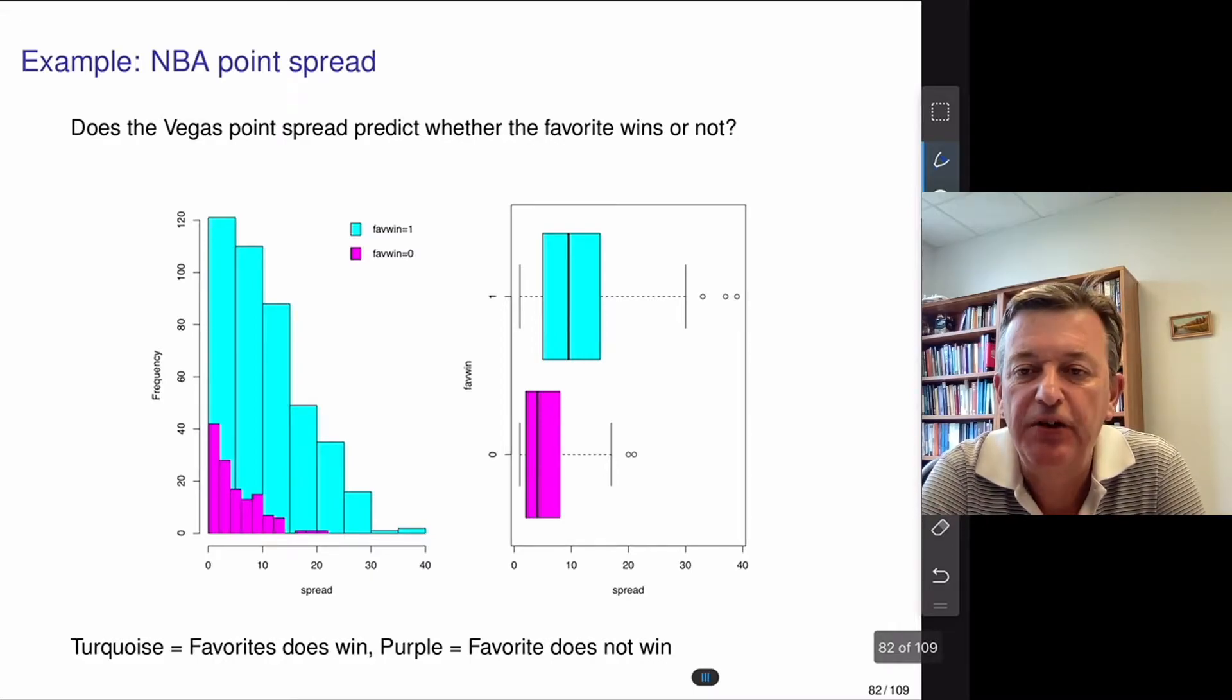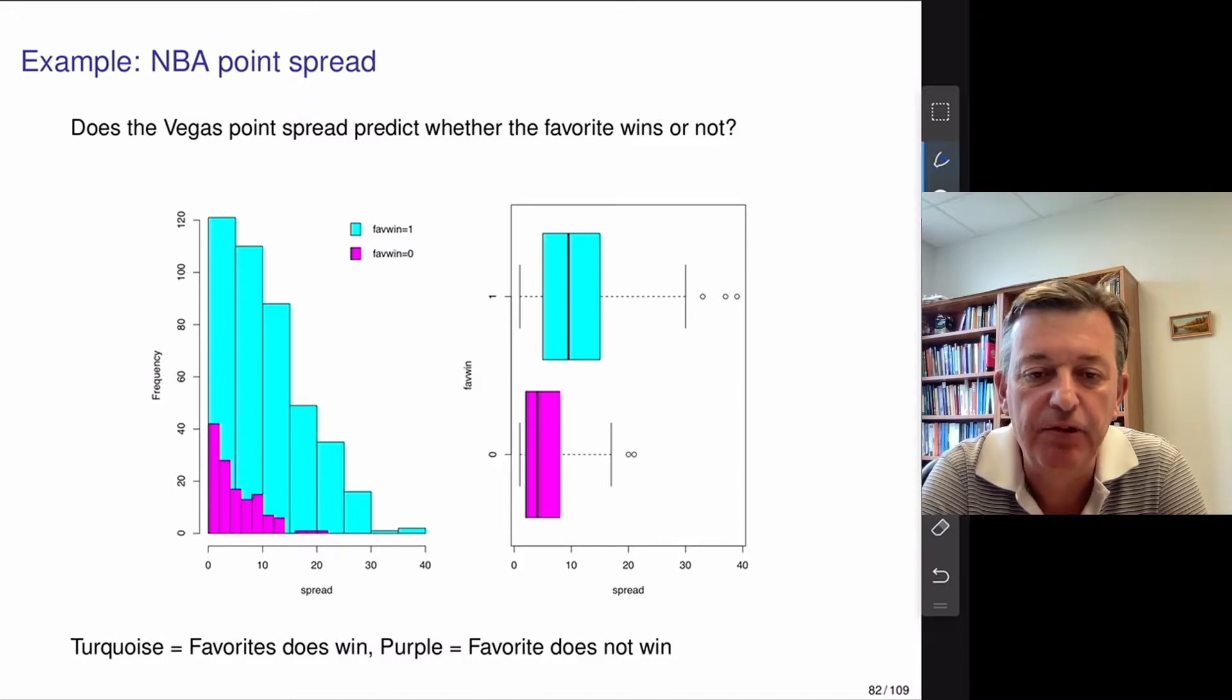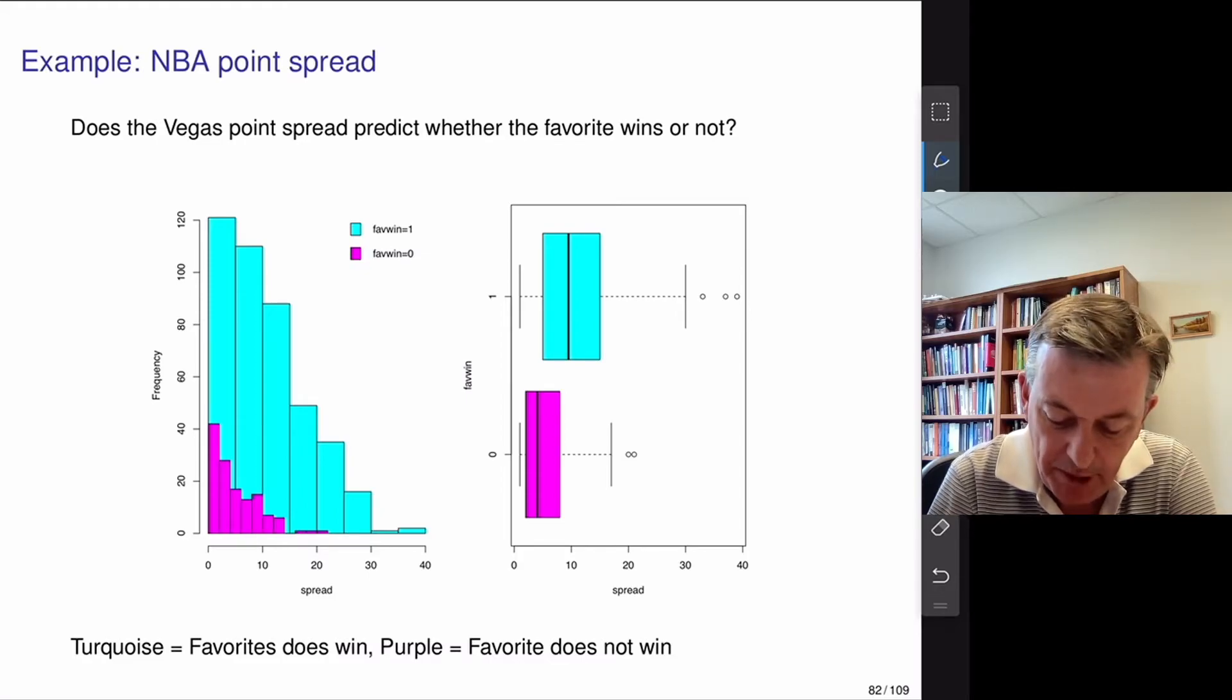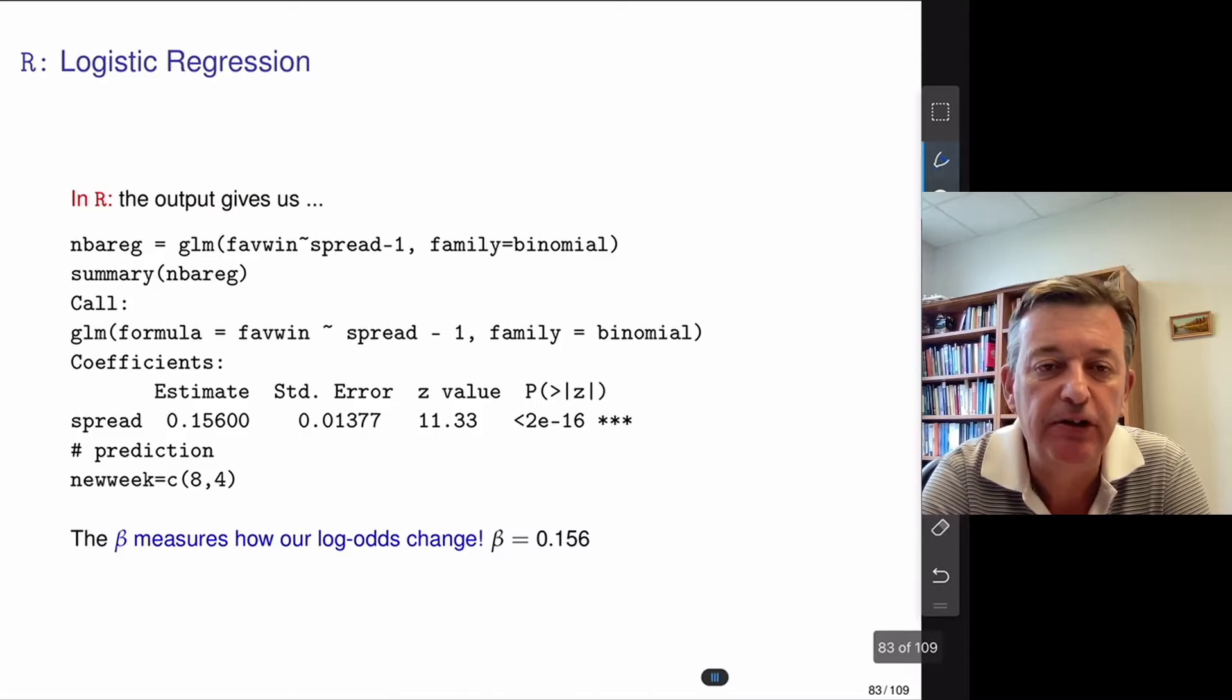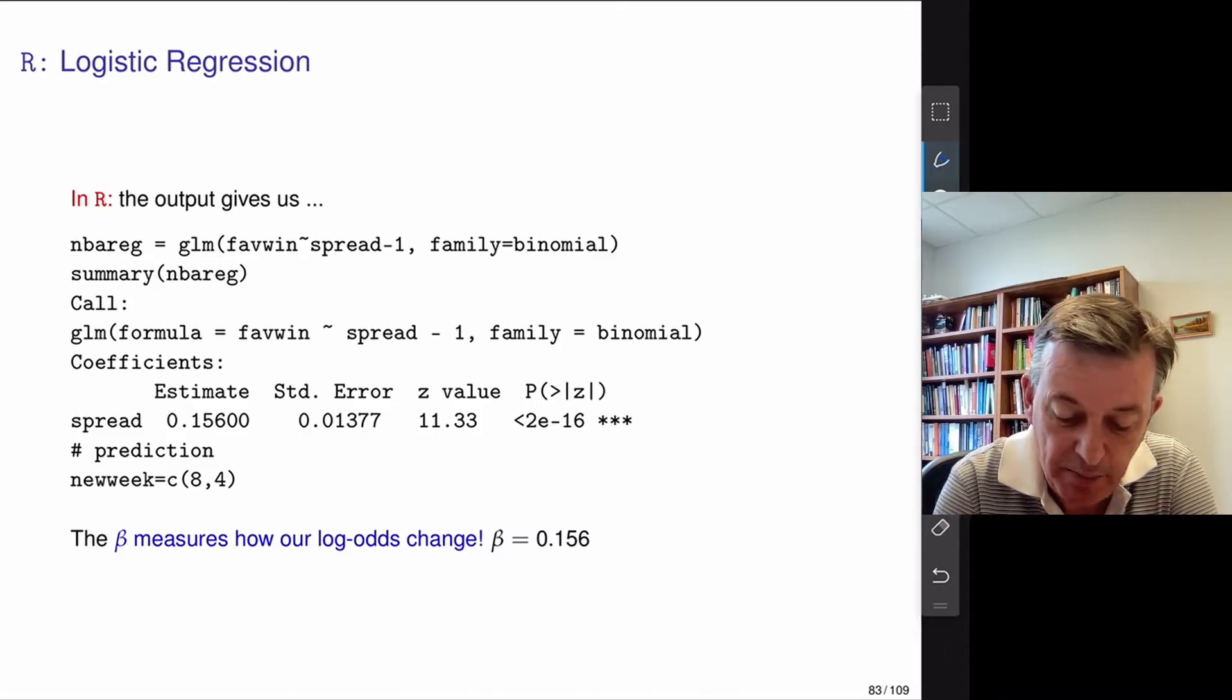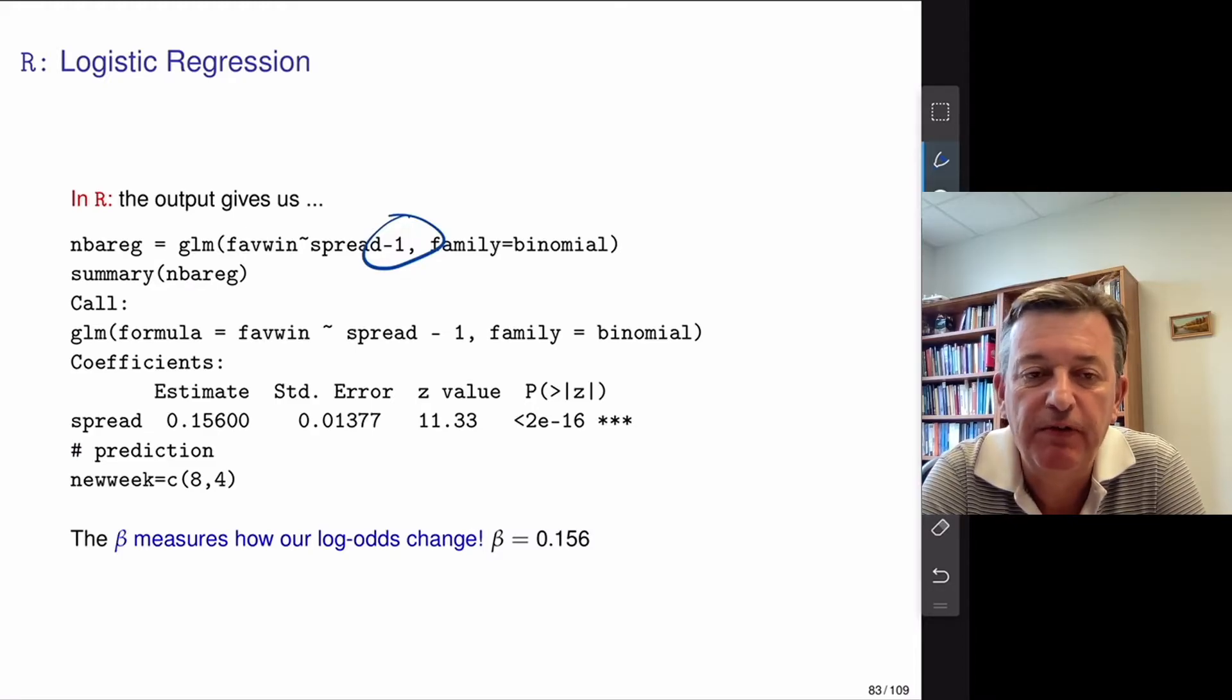So here's a little example, a simple example. Does the Las Vegas point spread predict whether or not the favorite wins in a bunch of NBA games? So we'll do a simple example. Turquoise, the favorite wins. Purple, the favorite does not win. So most of the time the favorite wins. Sometimes they don't. What happens if I run this regression? Spread minus one means I'm taking out the intercept. So if the point spread is zero, essentially I'm assuming it's 50-50.